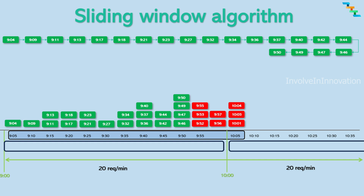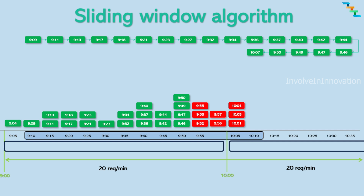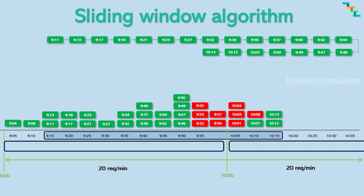Now, the head at 9 minutes and 04 seconds is not in the sliding window range, so this head is removed. Now there are only 19 requests in this period range, so the new request is accepted and the timestamp is added to the tail of the linked list. I will let this animation run for some more requests so we get more clarity about the sliding window algorithm.